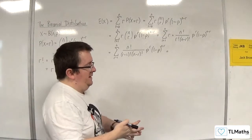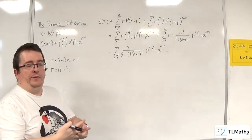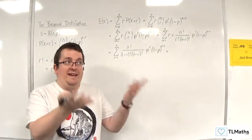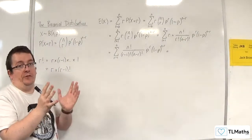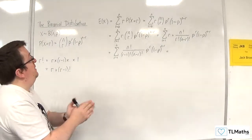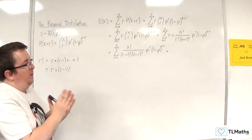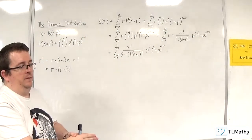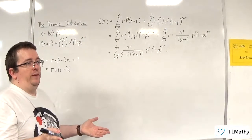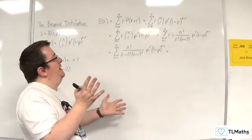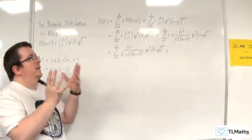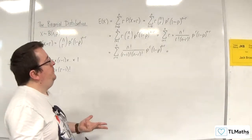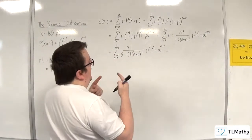Now it probably doesn't look any simpler to us, but let's think about what we need to get to. We know what the answer is going to be — we know that it's going to be n times p. So what I'm going to do is factor out n and p, because I know that's the answer. You might feel that's a bit of cheating — it is — but essentially if I do that, the next stage will become more obvious.